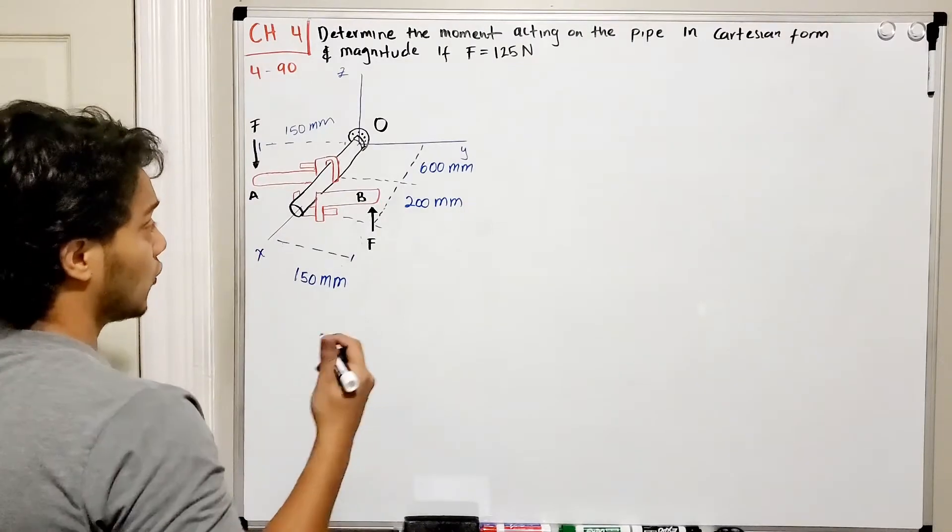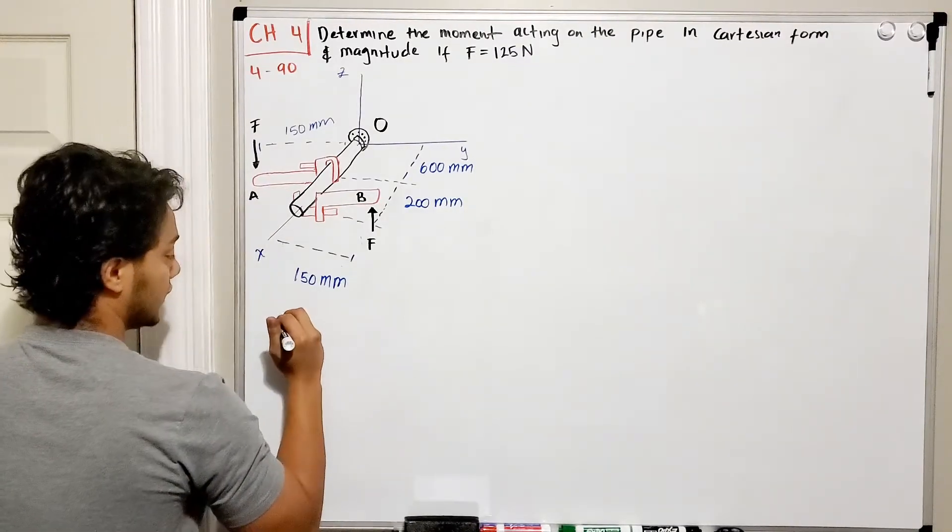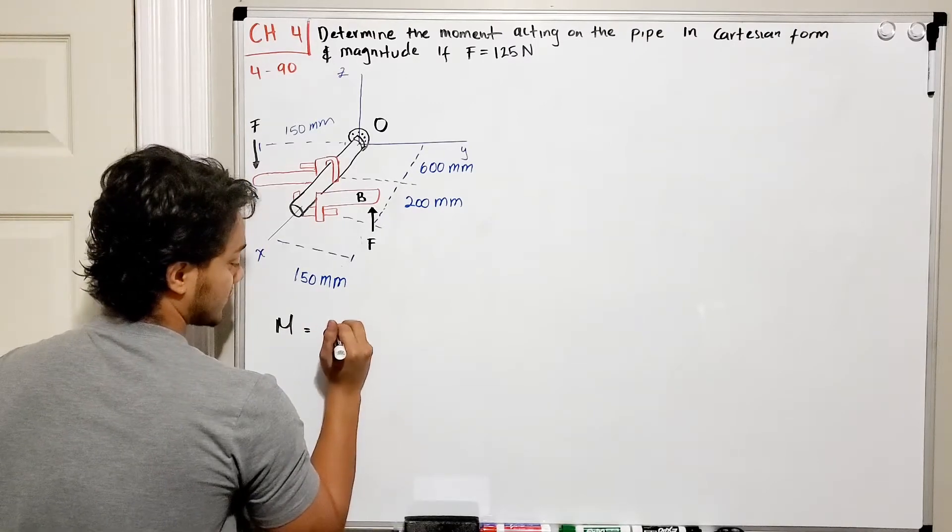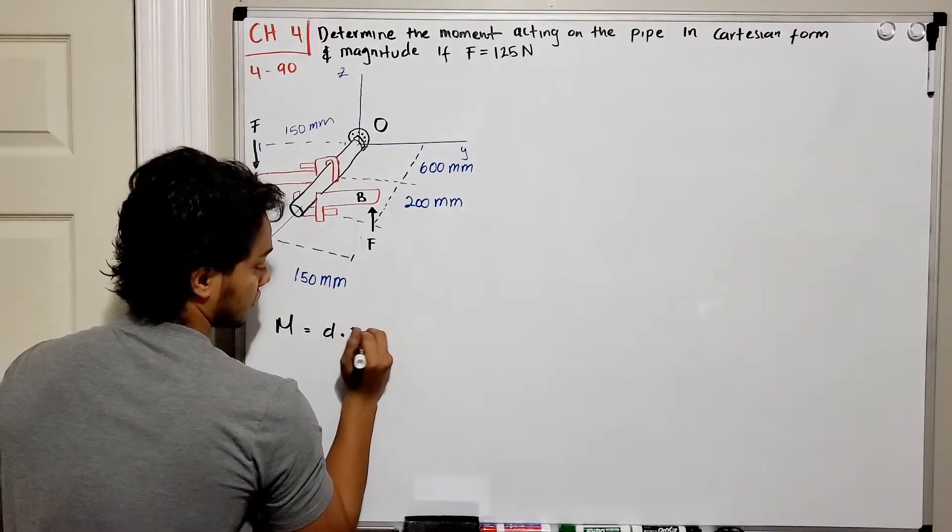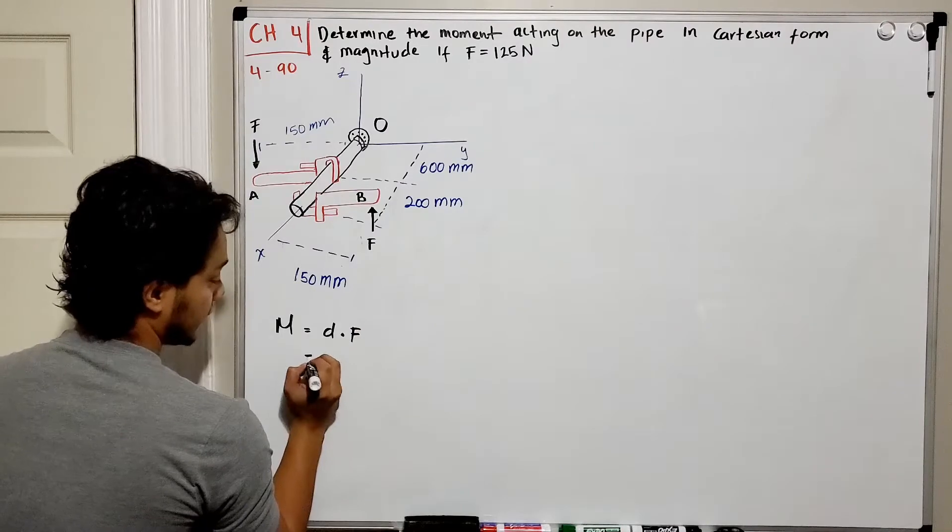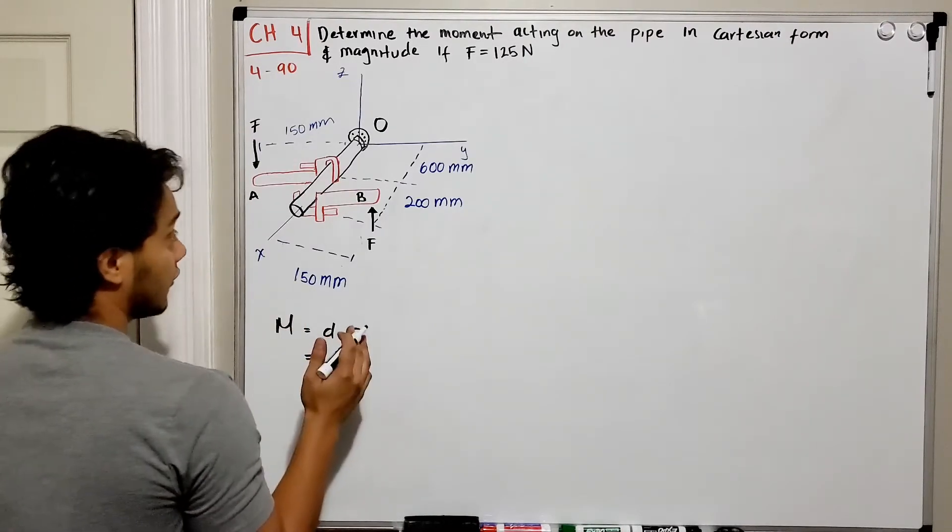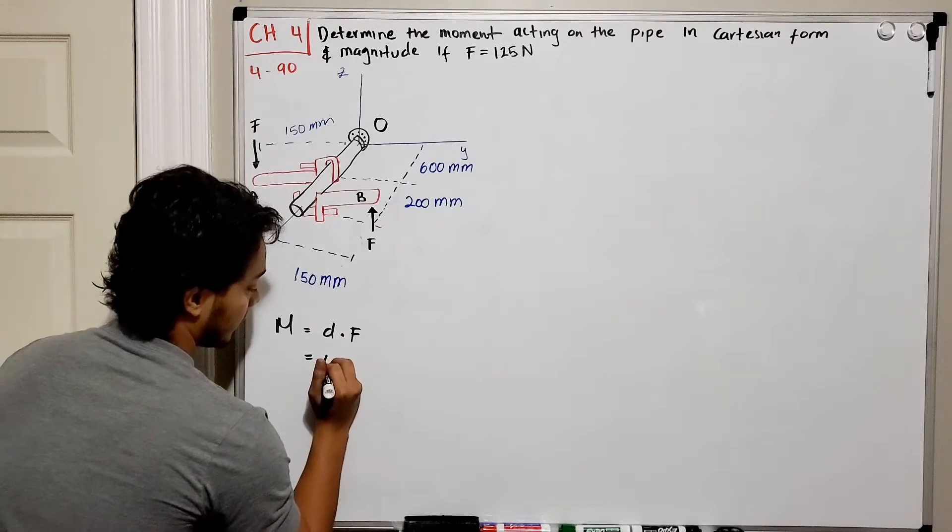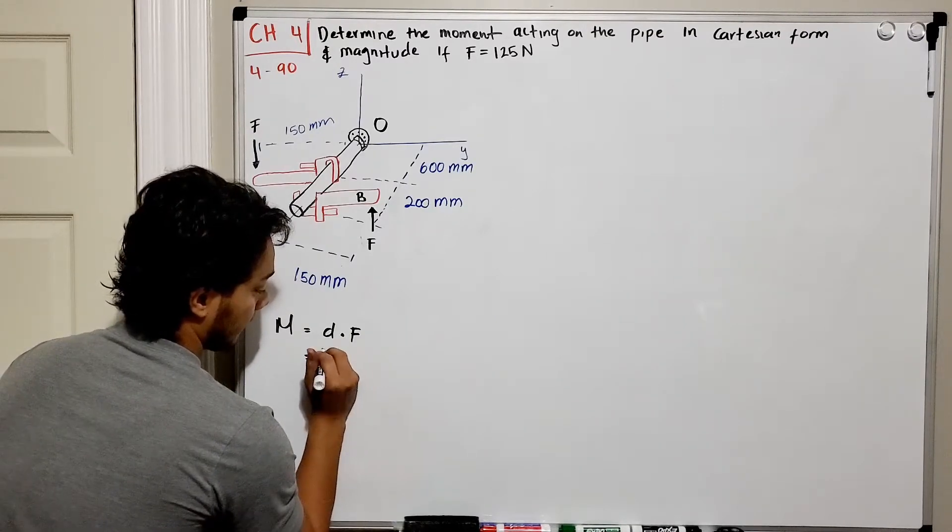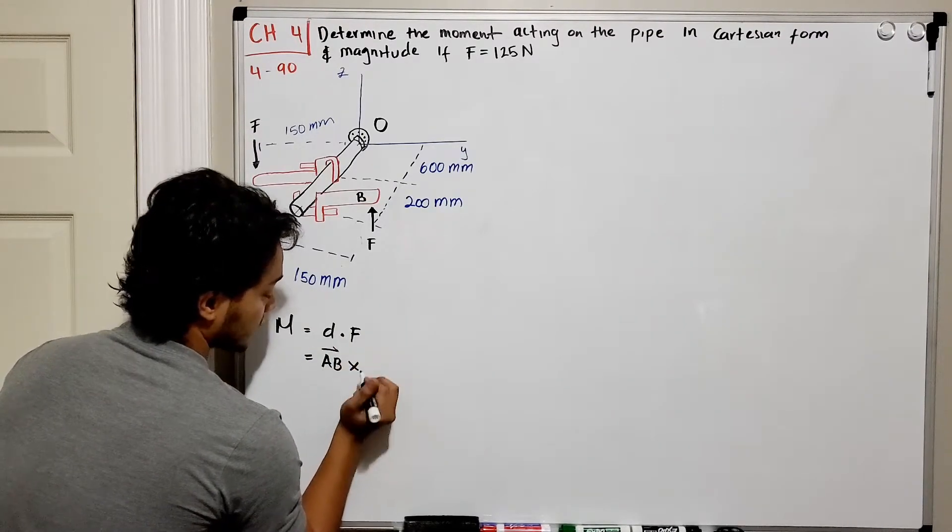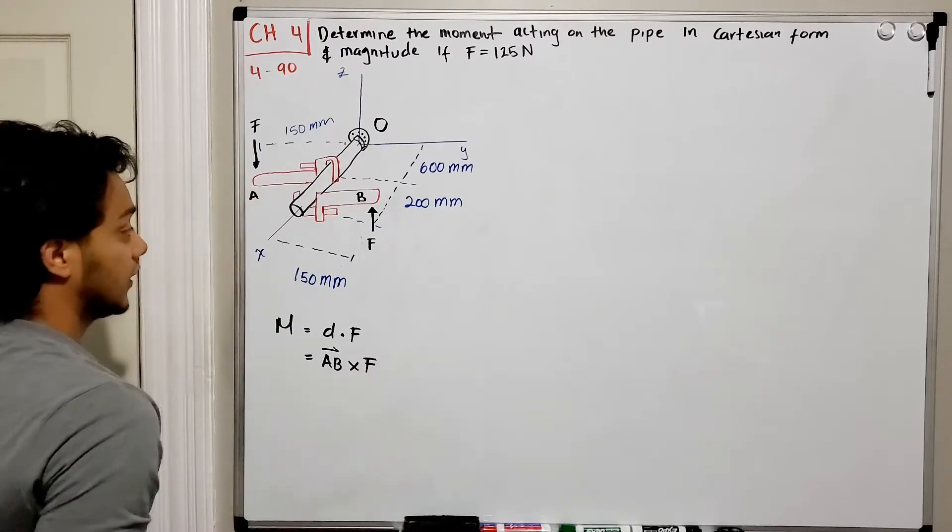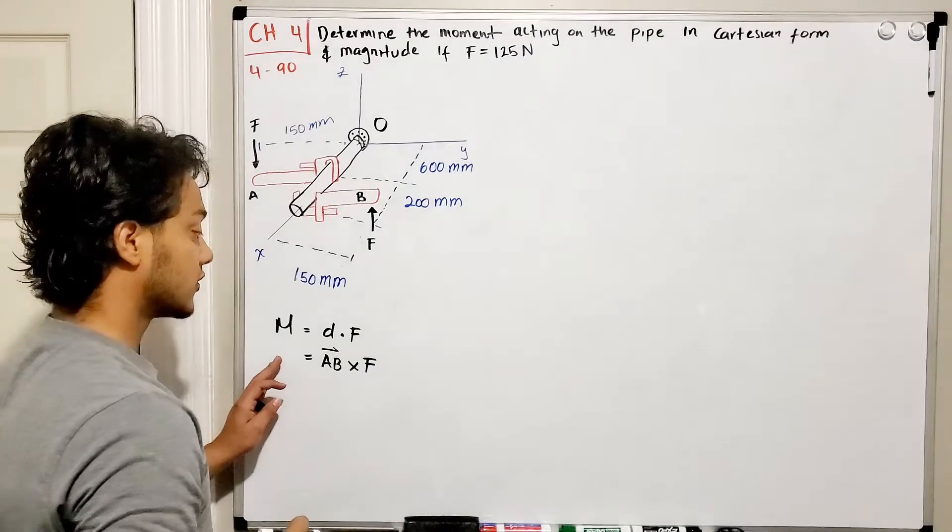They want us to find the moment, so we know that for a moment it's going to be equal to distance times force. In our 3D case we can think of that as a vector distance, so for example in this case vector AB cross product of my force F, and this will give me my moment in Cartesian vectors.